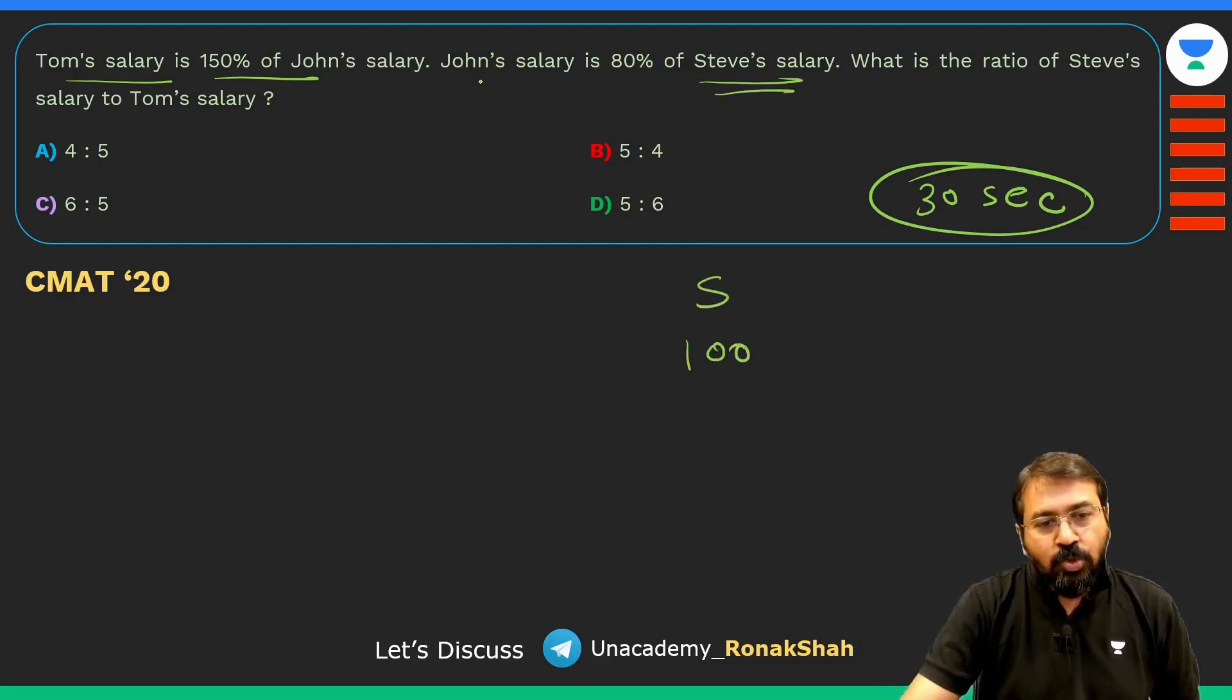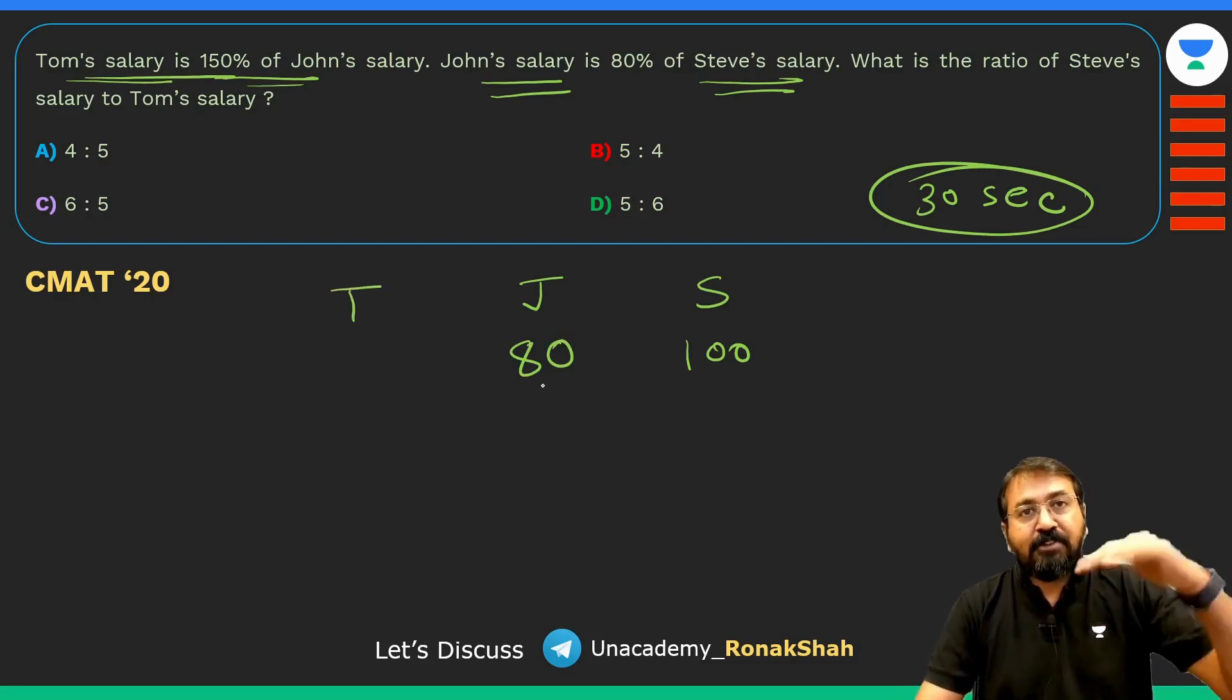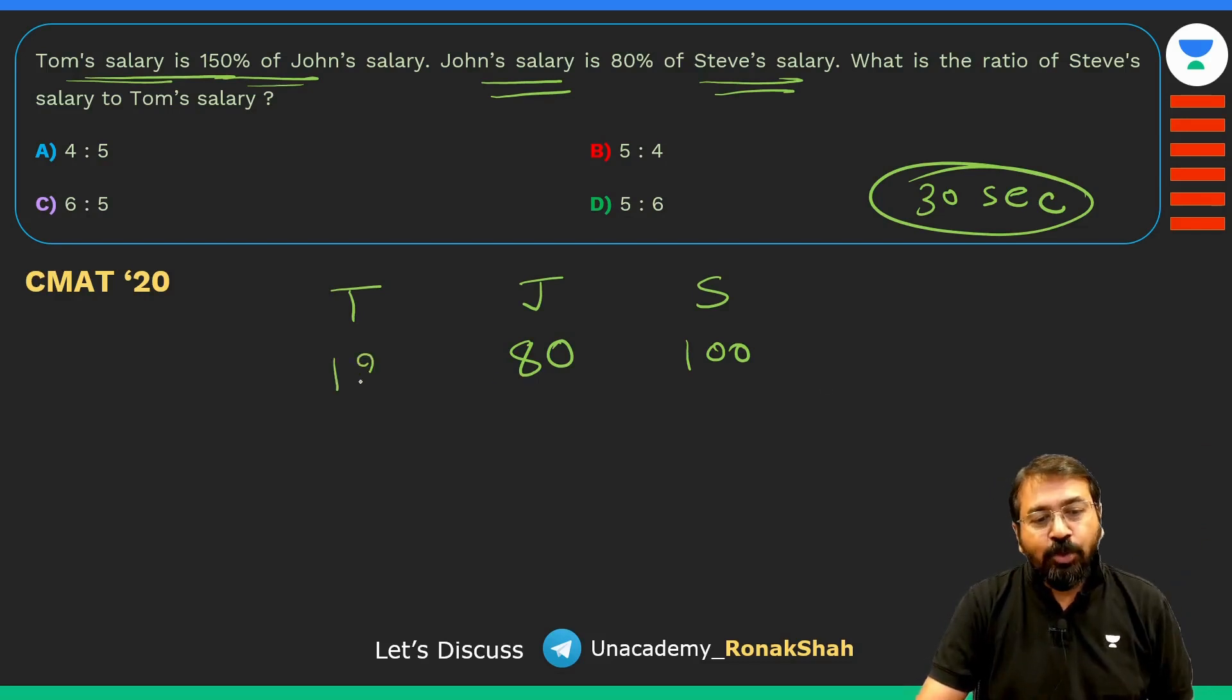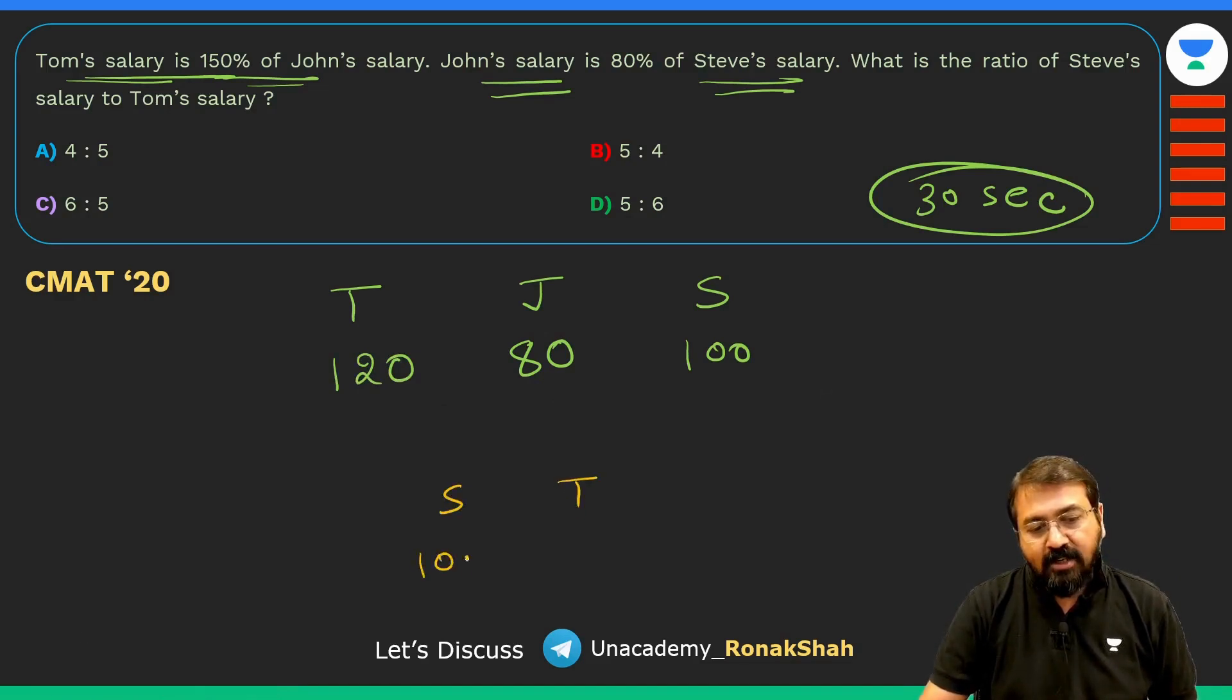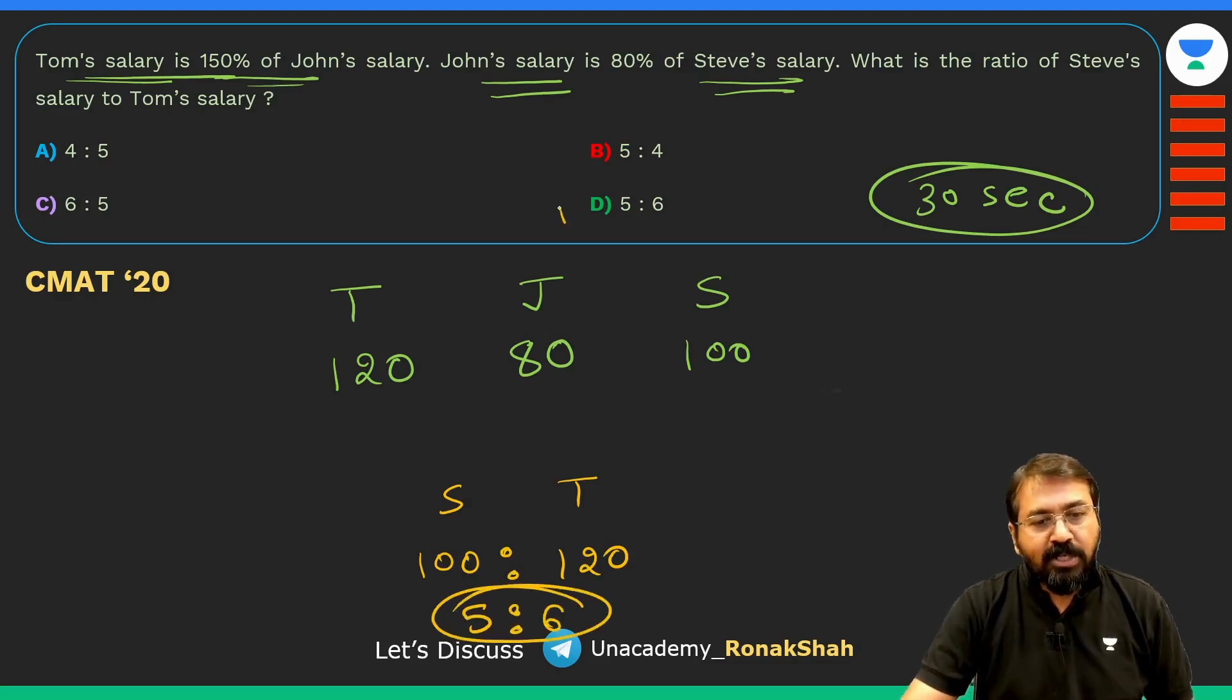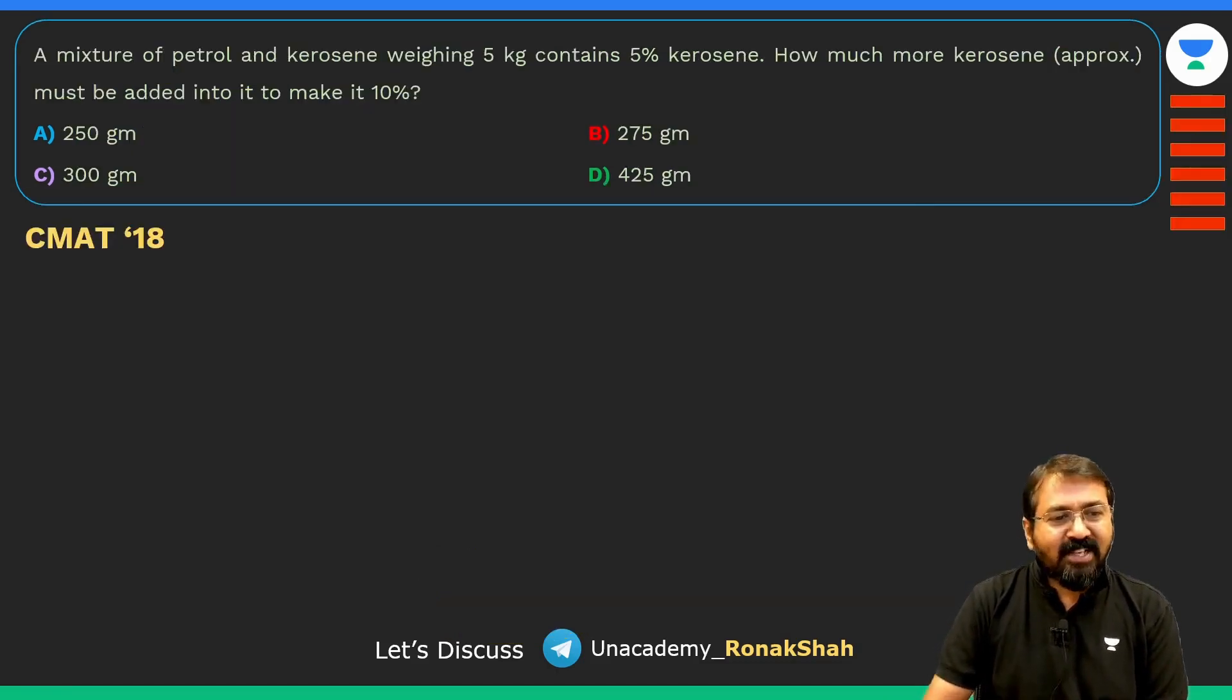Let's assume Steve's salary is 100, so John's salary is 80% of Steve's salary, which is 80. Tom's salary is 150% of John's salary, so Tom's salary will be 150%, that is 50% more than 80, so it is going to be 120. We are asked to find the ratio of Steve's salary to Tom's salary, so it's 100 is to 120, or 5 is to 6. Option D is the answer.